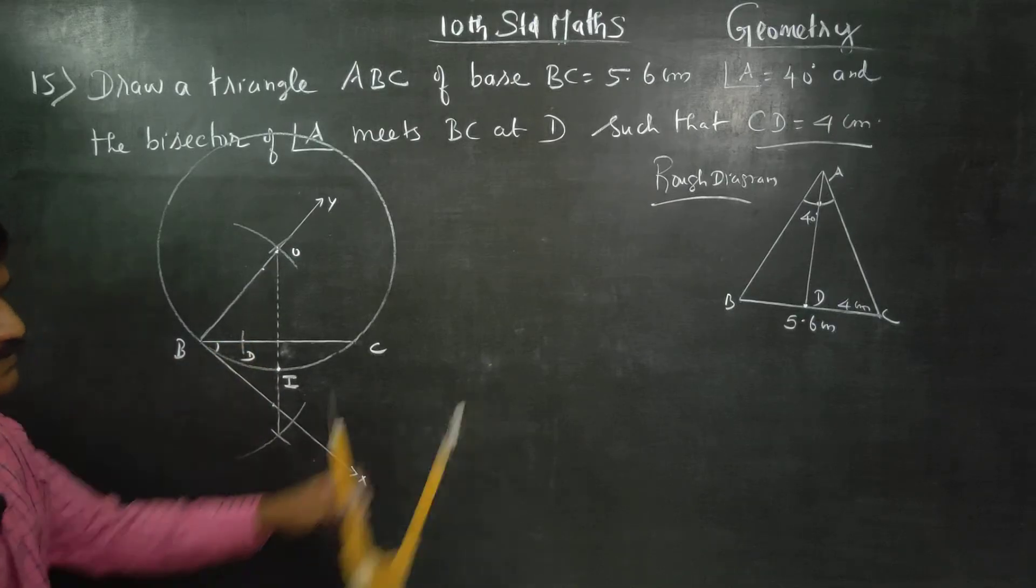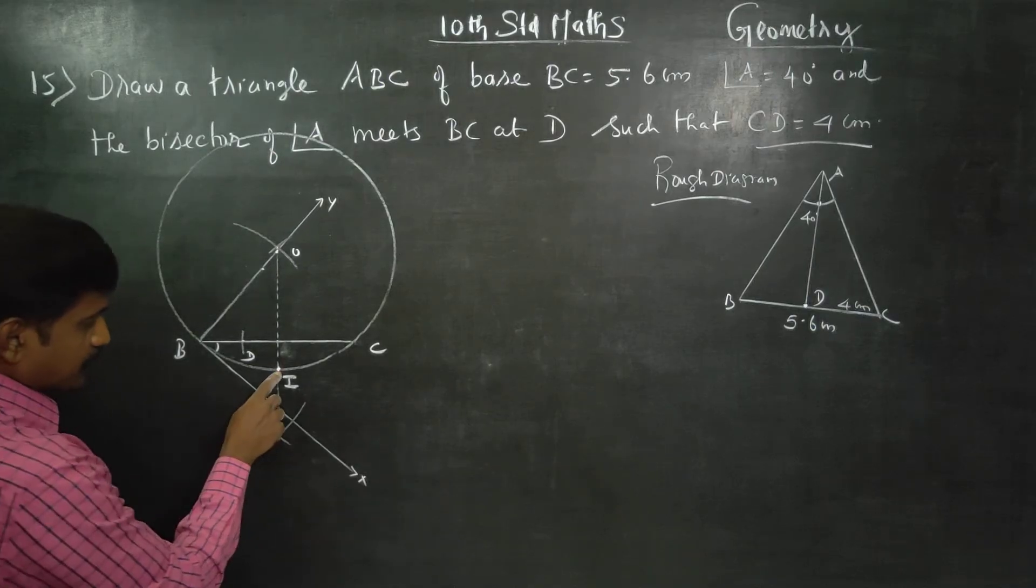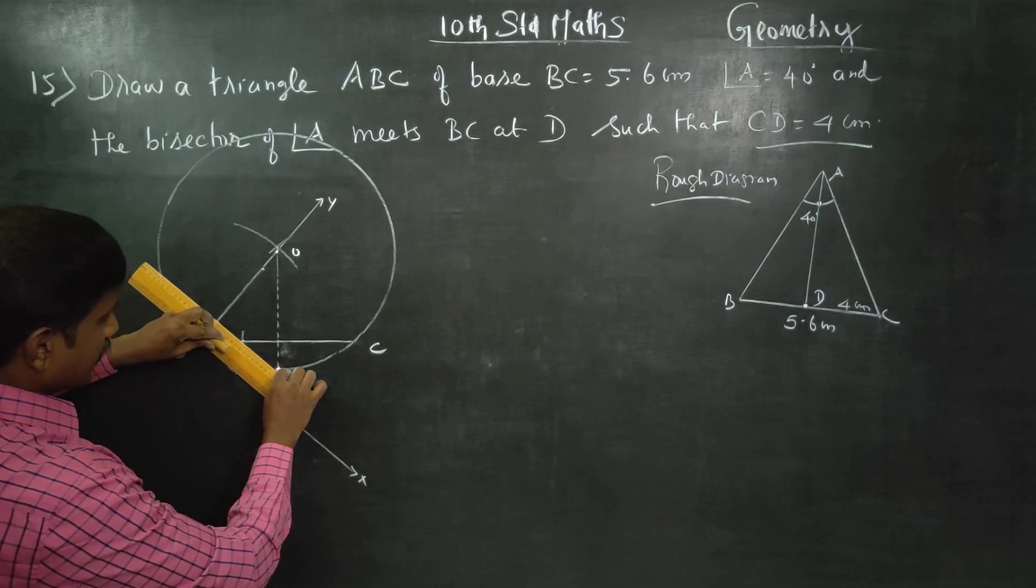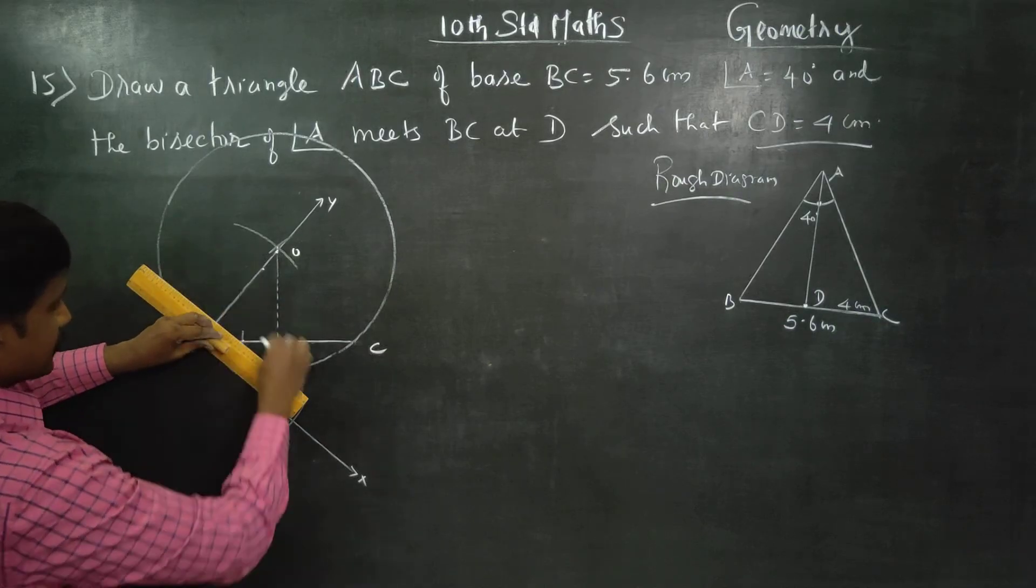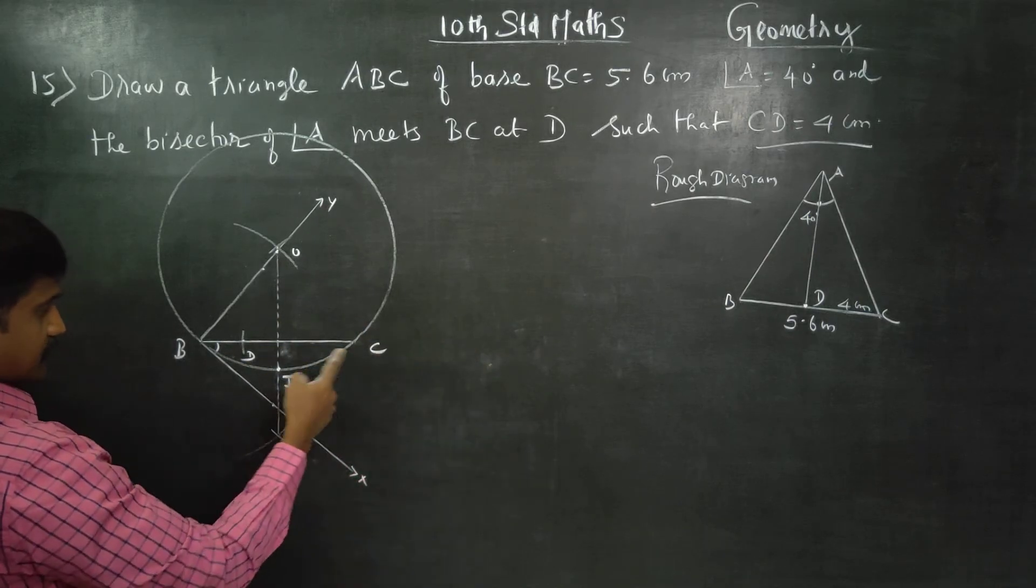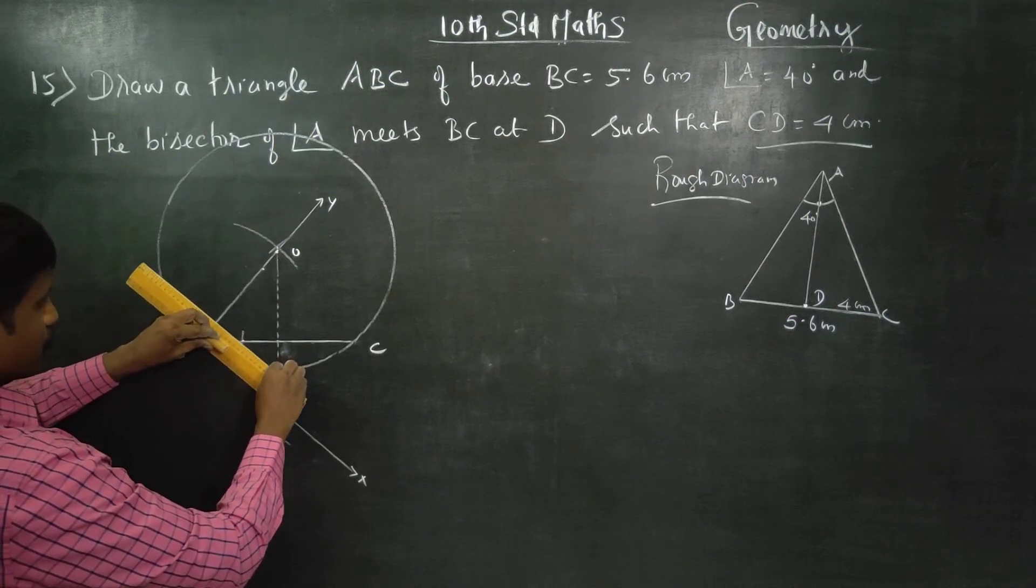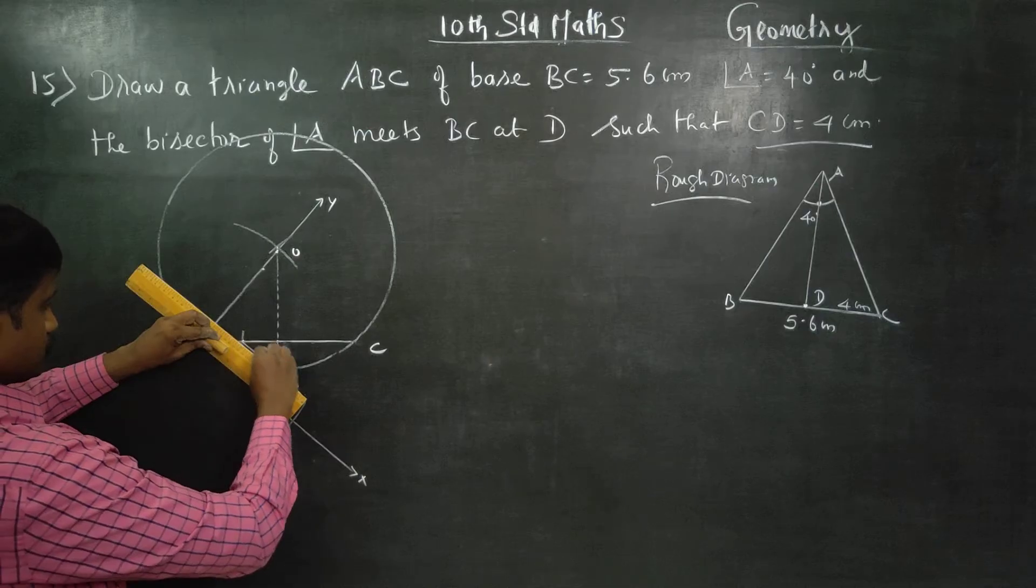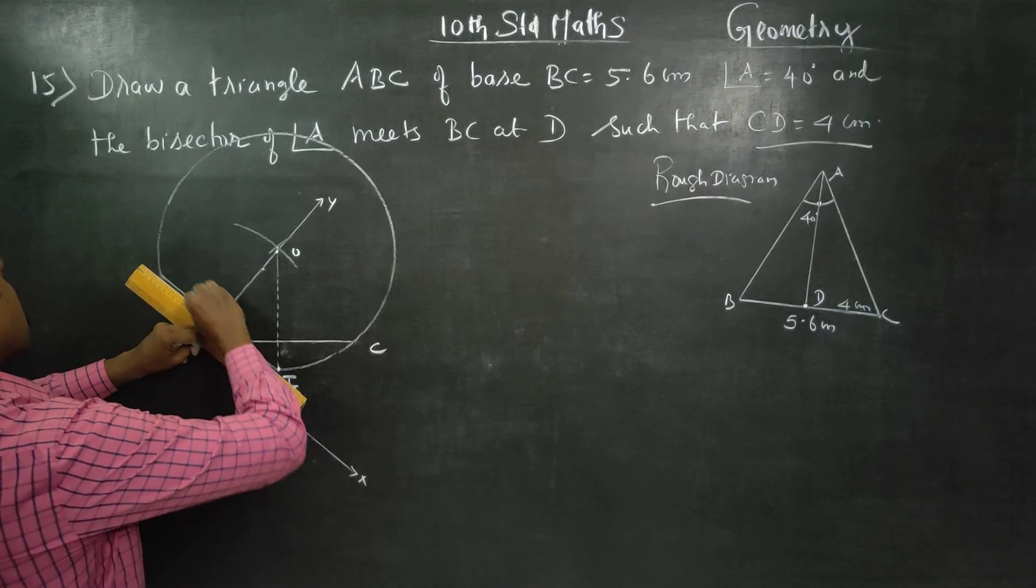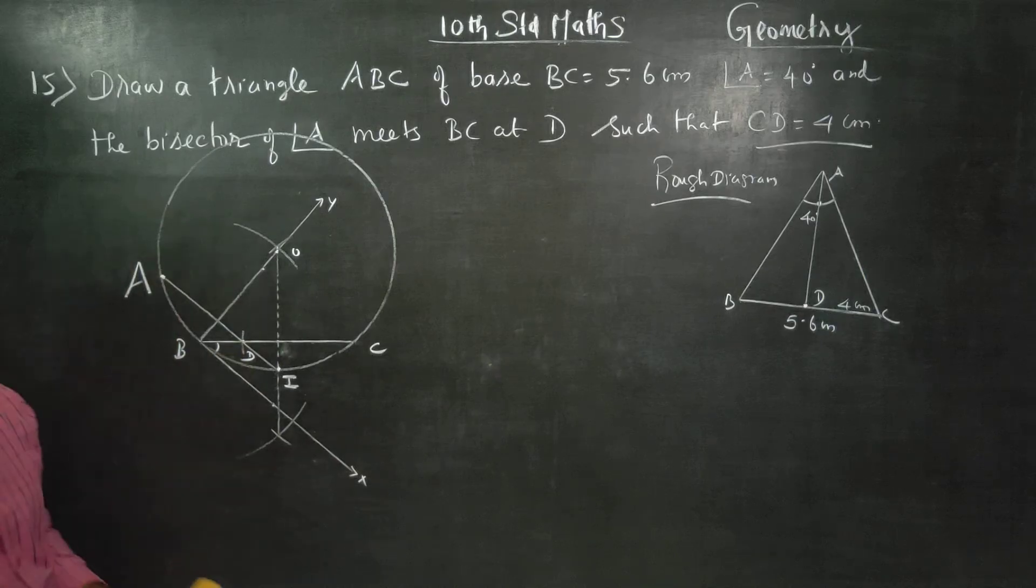At the D point, CD is 4 cm. This is it. Produce ID. Join ID. Join ID and produce it to meet the main circle. 4 cm. You have to produce. You have to join this and produce. ID produce it to meet the main circle.